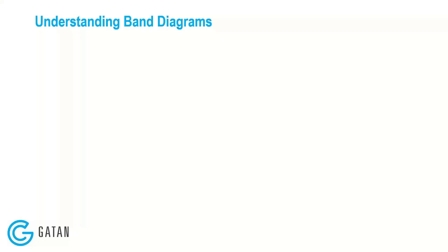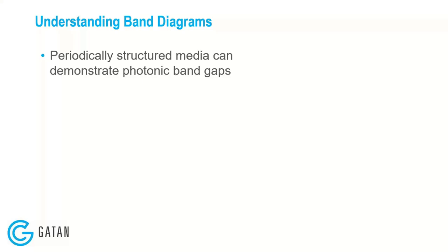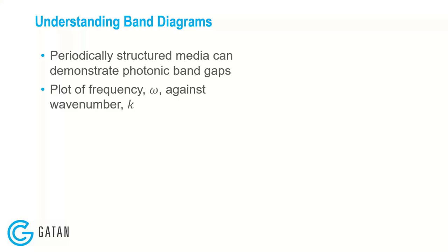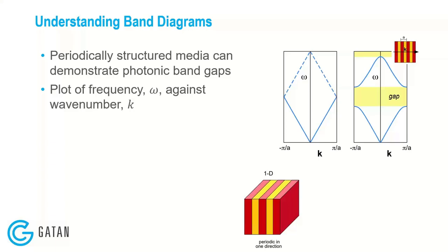Today we're going to talk about photonic and plasmonic specimens, so we need to understand band diagrams or dispersion diagrams. These crystal structures are periodically structured dielectric materials that can demonstrate photonic band gaps. A band diagram is a plot of frequency against wave number k. This is what you'd expect in free space; the bands overlap at the edge to generate a band gap. This is a one-dimensional photonic crystal where we change the dielectric coefficient periodically.